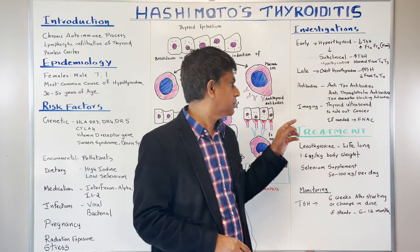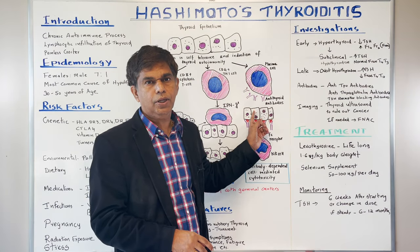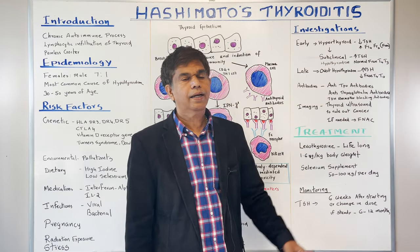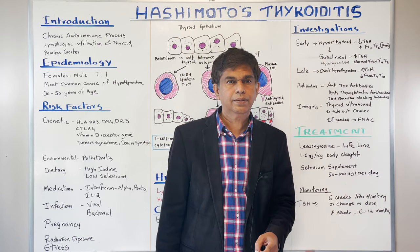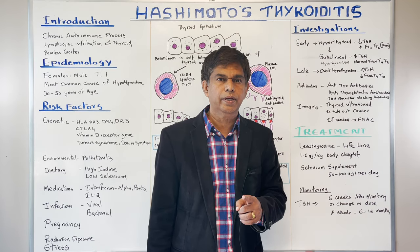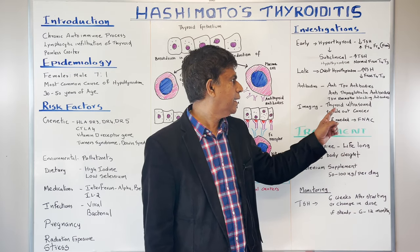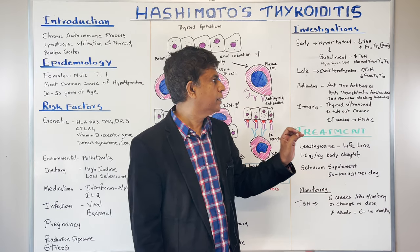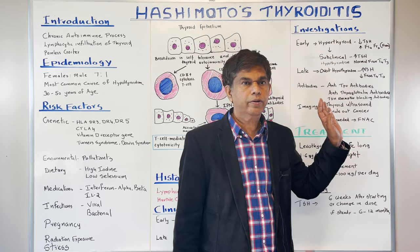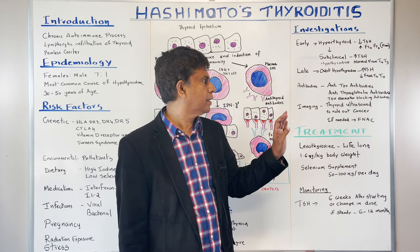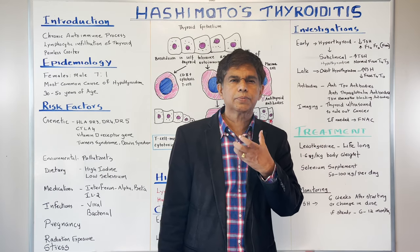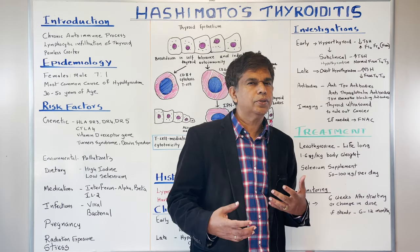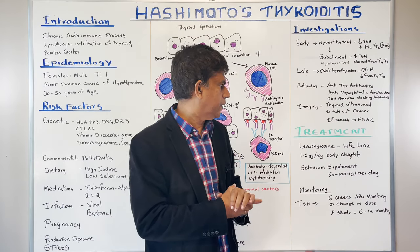For antibodies — three antibodies you must check: antithyroperoxidase antibodies, antithyroglobulin antibodies, and TSH receptor blocking antibodies. For imaging, you're mainly evaluating the goiter. If there is a painless goiter, check antithyroperoxidase antibodies, rule out cancer, and if indicated, consider doing FNAC.